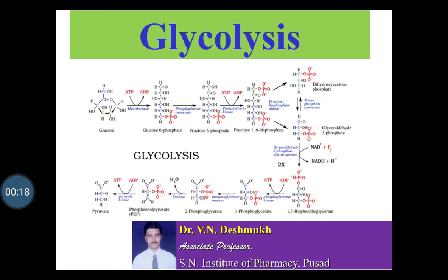Glycolysis is an important pathway which takes place after the photosynthesis. It is the central pathway for the glucose catabolism in which glucose is converted into pyruvate through a sequence of 10 steps. Glycolysis takes place in both aerobic and anaerobic organisms and is the first step toward the metabolism of glucose. In most kinds of cells, the enzymes that catalyze glycolytic reactions are present in the extra-mitochondrial fraction of the cell, in the cytosol. One common characteristic of all enzymes involved in glycolysis is that nearly all of them require magnesium ions. The primary function of glycolysis is to produce energy in the form of ATP.